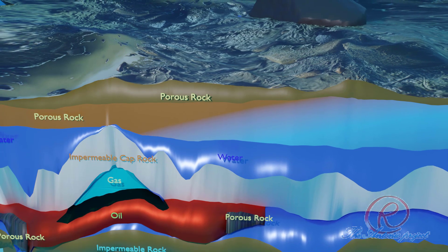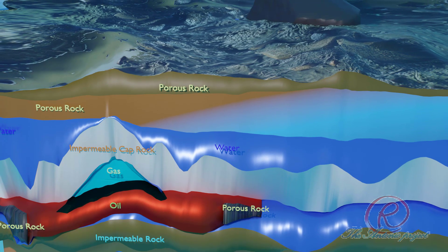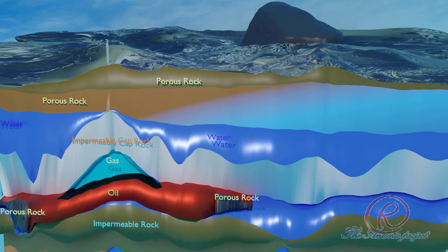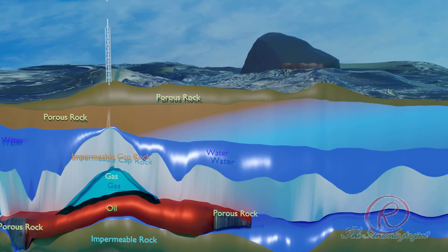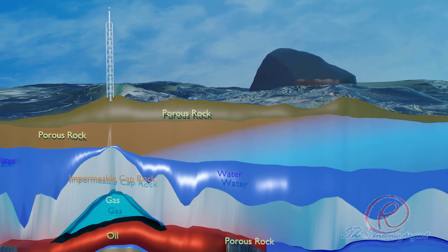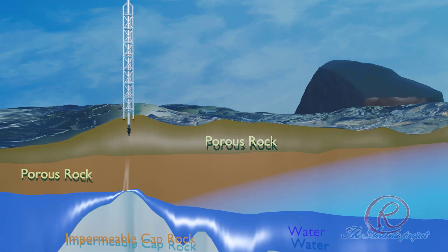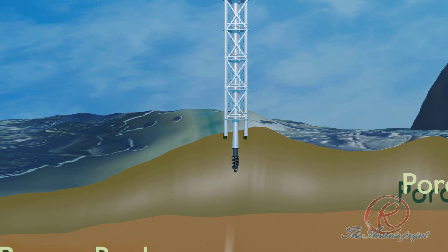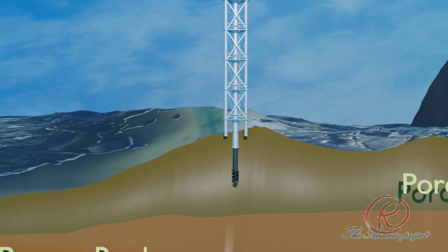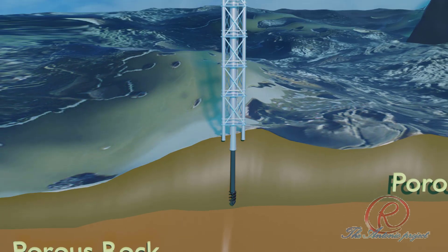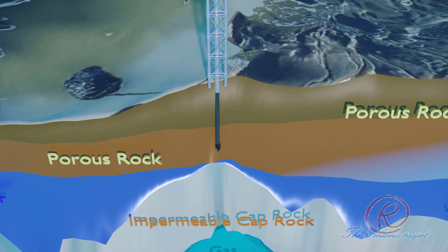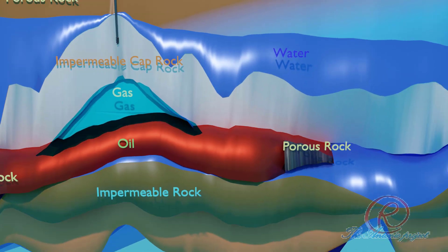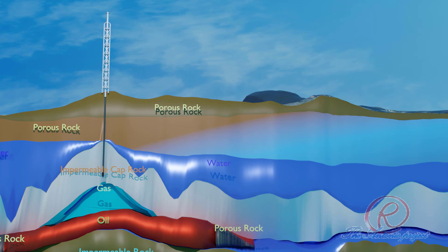The LNG story begins from the dawn of the earth, where natural gas is commonly found. Natural gas is a fossil fuel energy source that contains many different compounds. The largest component of natural gas is methane, a compound with one carbon atom and four hydrogen atoms, or CH4. Geologists locate the types of geologic formations likely to contain natural gas deposits using seismic surveys on land and in the ocean.